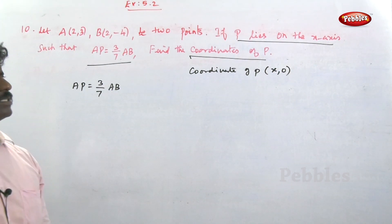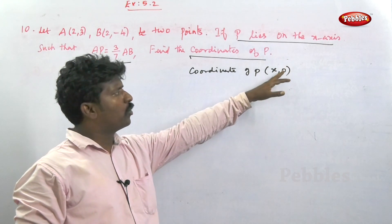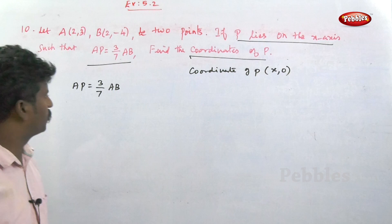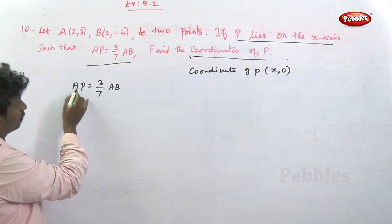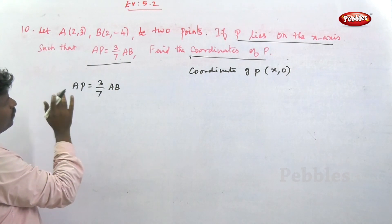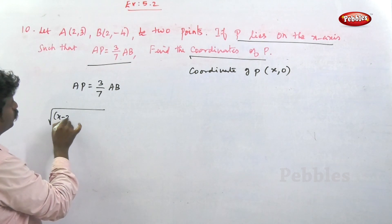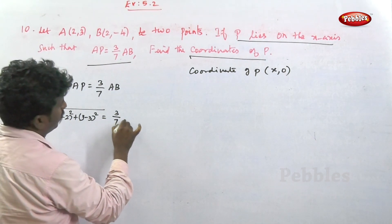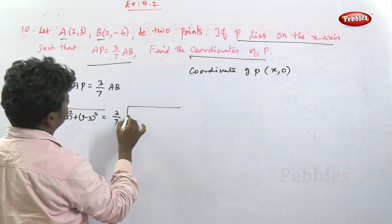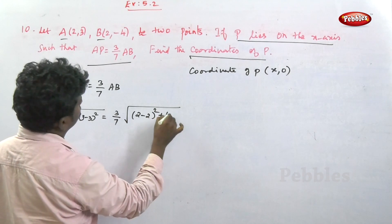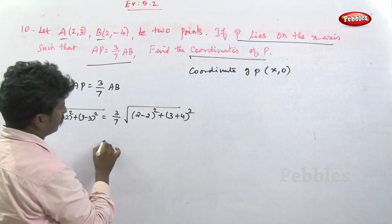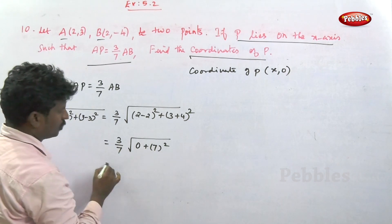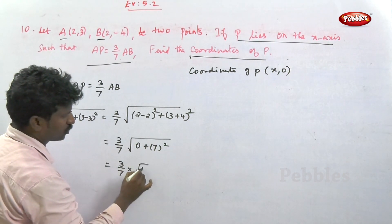Now computing AP: root of (x minus 2) squared plus (0 minus 3) squared equals (3/7) times AB. For AB: A is (2,3) and B is (2,-4), so AB equals root of (2 minus 2) squared plus (3 plus 4) squared = root of (0 + 49) = 7. So AP equals (3/7) times 7 equals 3.